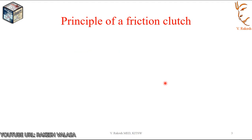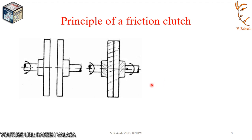Now see the principle of a friction clutch. A clutch works on the principle of friction. It can be explained by considering two shafts — this is the driving shaft, this is the driven shaft — and two discs — this is the driving disc. Let shaft A and disc B revolve at a speed of N rpm, and disc D, keyed to shaft C, is initially at rest — that is, the clutch is not engaged. Then some force W is applied axially to disc D, making it come in contact with disc B.